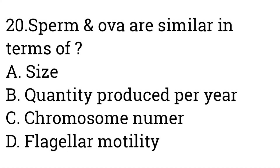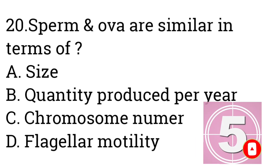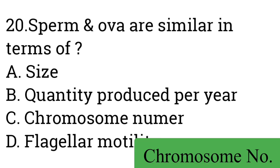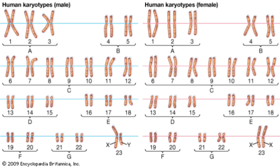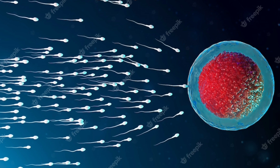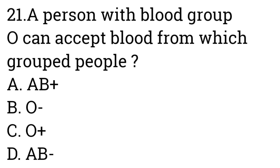Question number twenty: Ovum and sperm are similar in terms of — A: Size, B: Quantity produced per year, C: Chromosome number, D: Flagellar motility. Answer is Chromosome number, as both male and female gametes consist of 23 pairs of chromosomes. The ovum is always bigger than sperm, sperm are produced in millions per day while only a single ovum is produced per month, and the ovum has no flagellar activity.